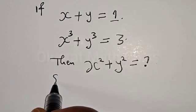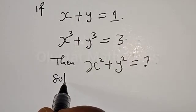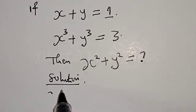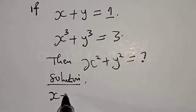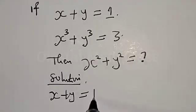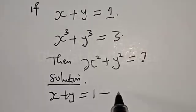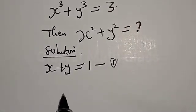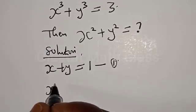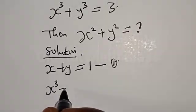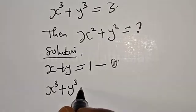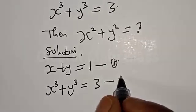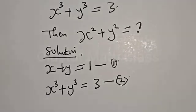Solution. We have s plus y equal to 1 — let's call this equation 1. Then, s cubed plus y cubed equal to 3 — this is equation 2.